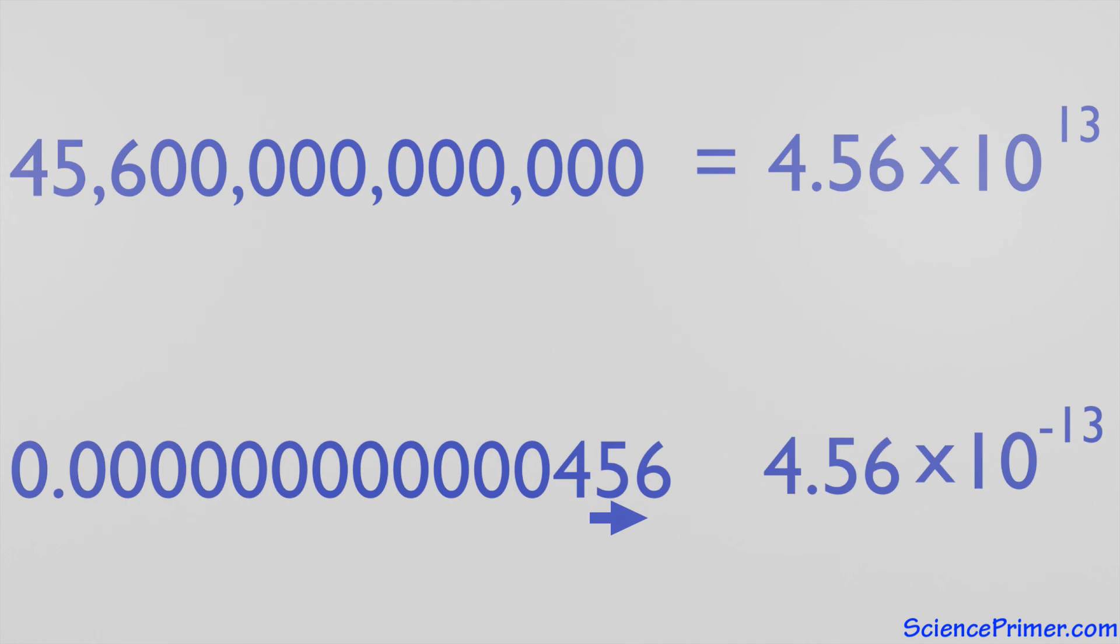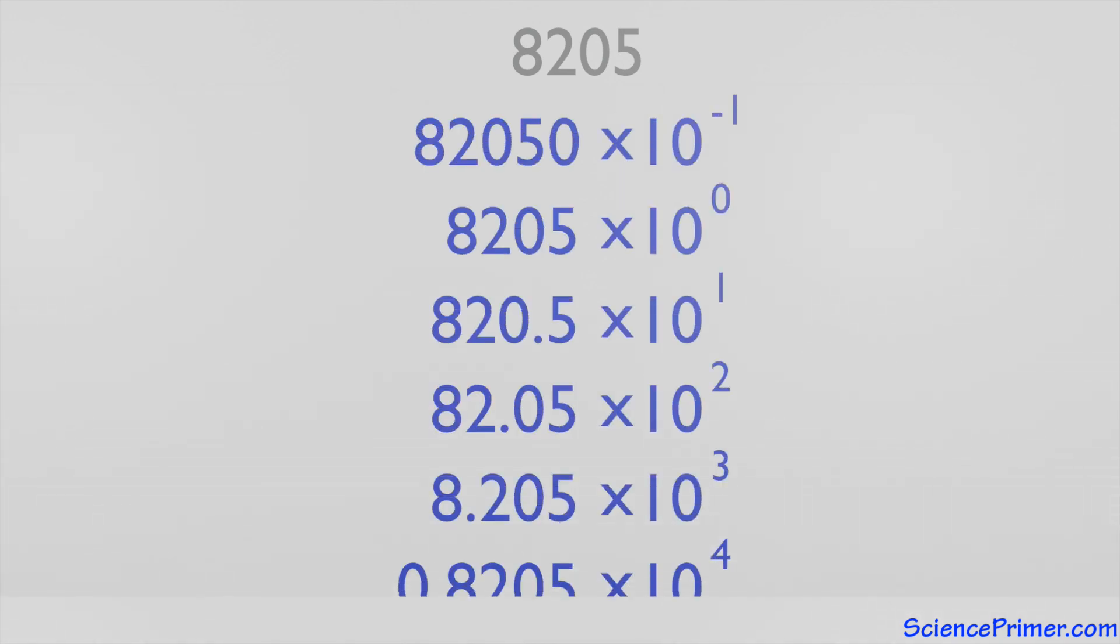This explanation focused specifically on how to write normalized scientific notation, but it is important to understand that there is a variety of ways to write a number in scientific notation. 8,205 can be written in scientific notation in any of these ways.